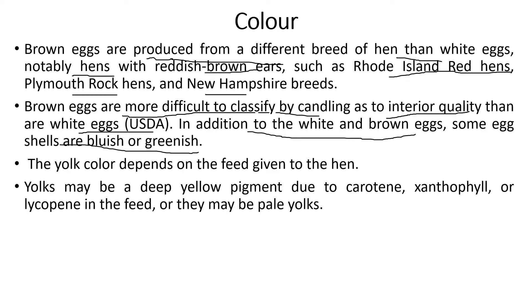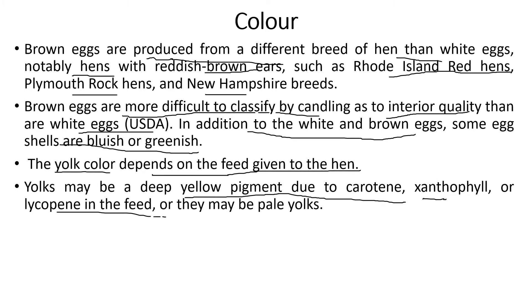Next, we consider yolk color, which depends on the feed given to the hen. The yolk may be a deep yellow pigment due to the presence of carotene, xanthophyll, and lycopene in the feed. Generally, yolks are yellow in color because of these pigments present in the hen's diet.